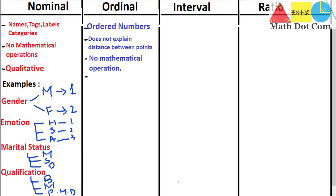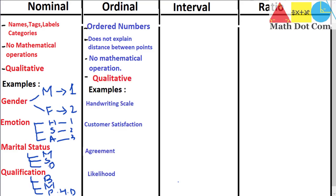Ordinal scale is also qualitative in nature, just as nominal scale, because we are discussing the quality of something. The first example of ordinal scale is the handwriting scale — levels could be excellent, good, fair, or poor. When we assign values: excellent = 1, good = 2, fair = 3, poor = 4. These numbers must be in an ordered manner so we can easily define high and low values.